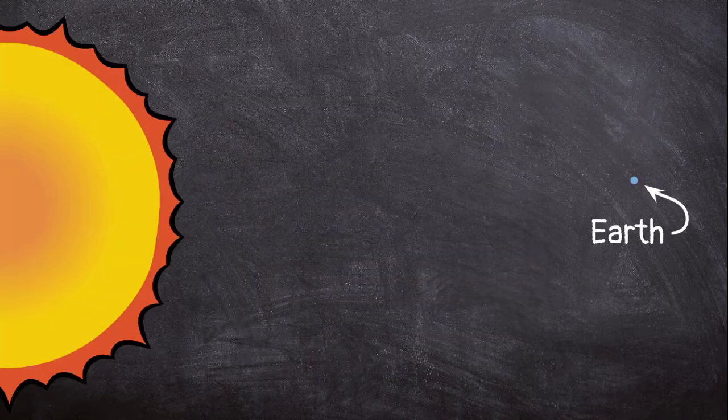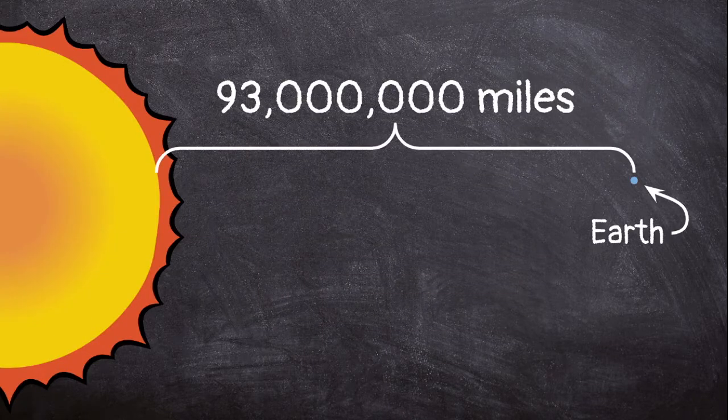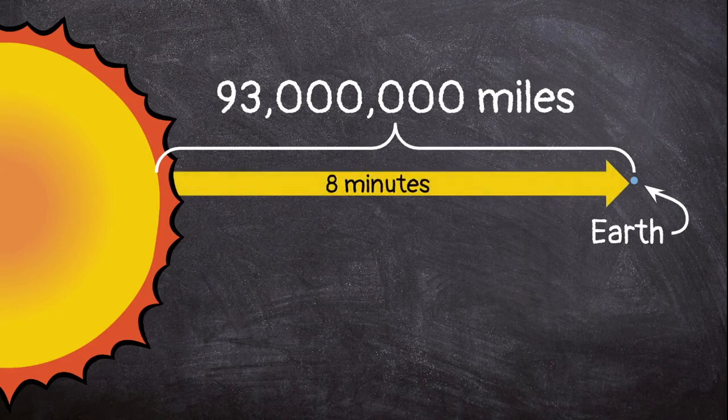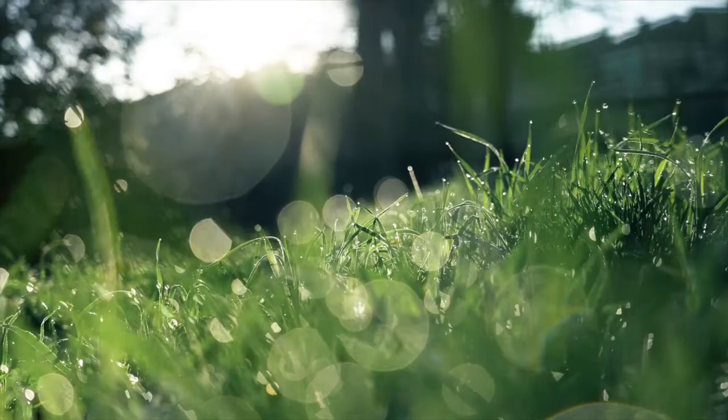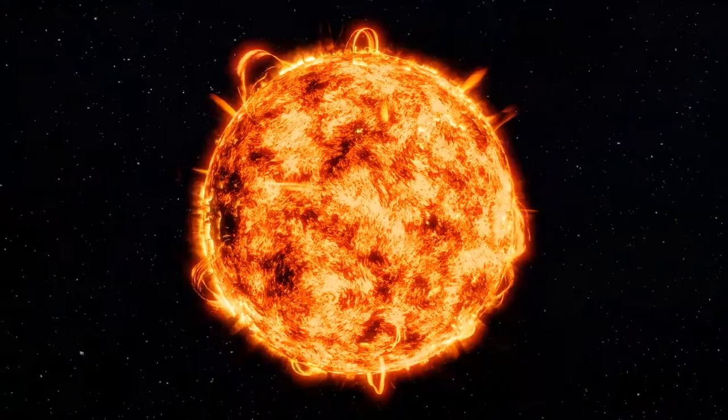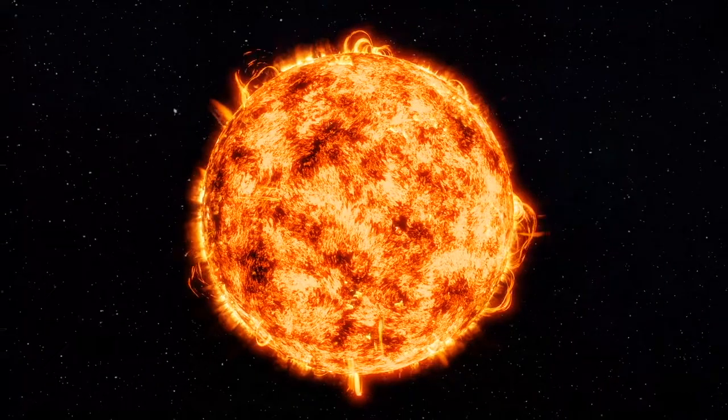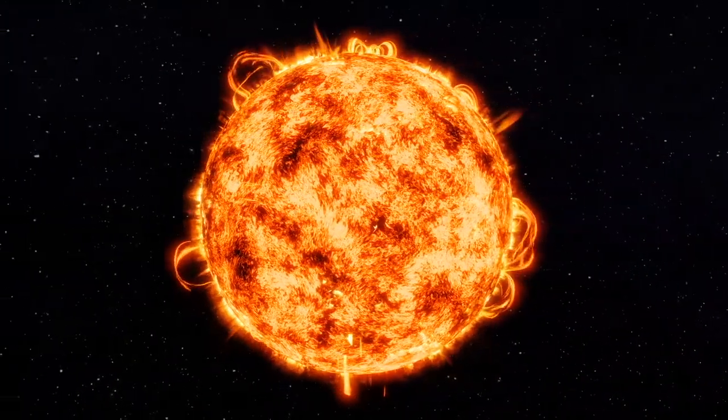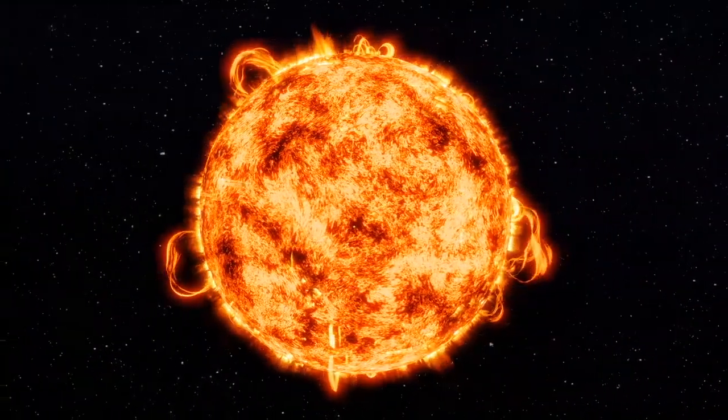The sun is about 93 million miles away from Earth, and it takes about 8 minutes for its light to reach us. All of the energy on Earth comes from the sun. The sun creates energy by combining hydrogen and helium gases. This process is called nuclear fusion.